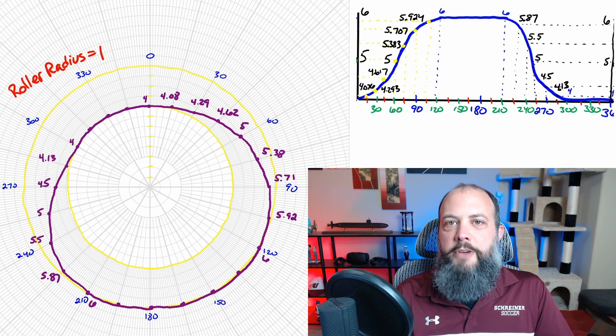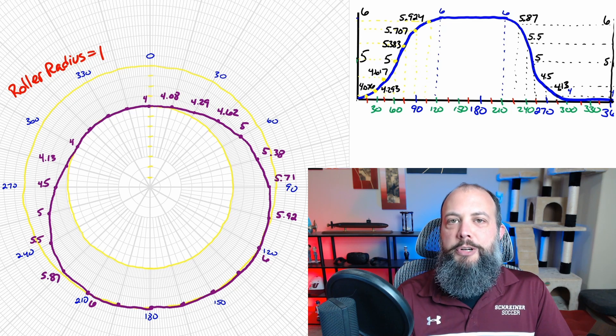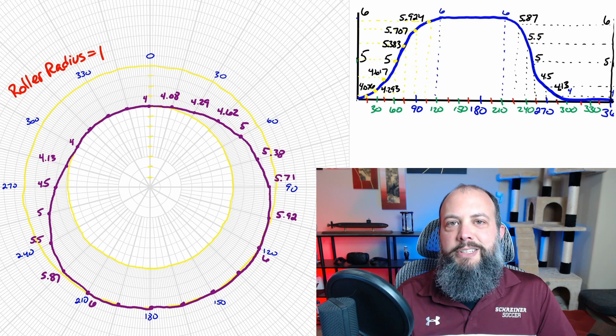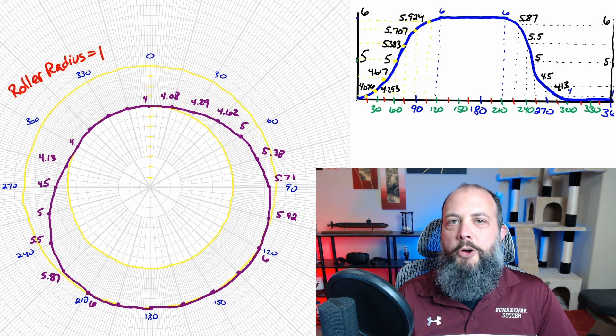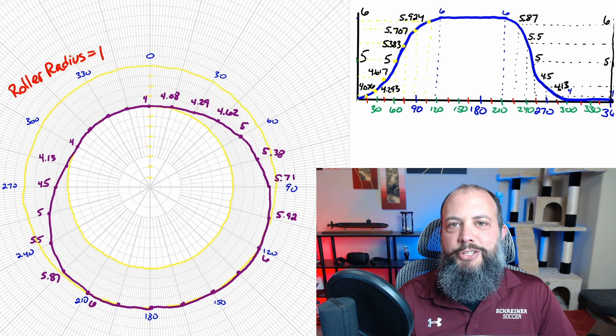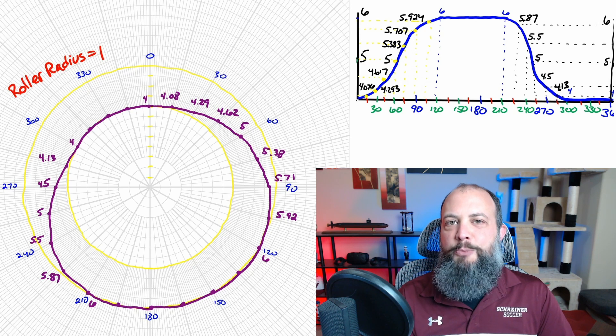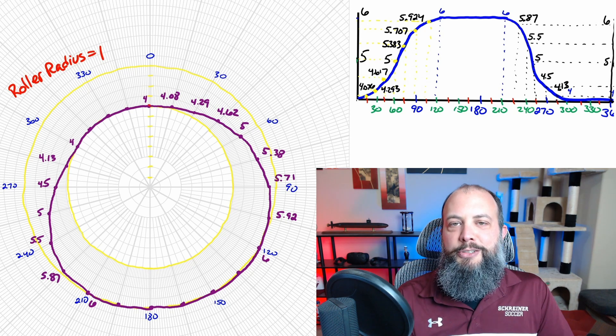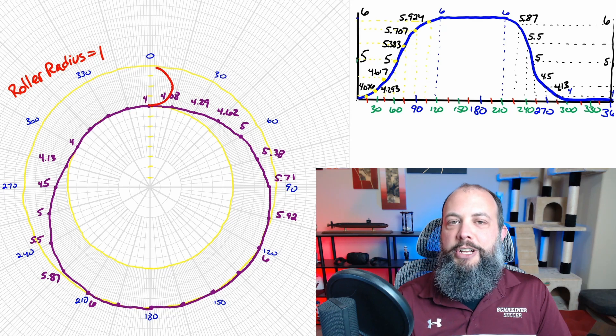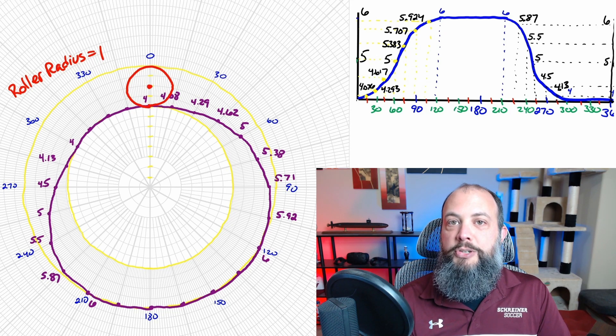Now suppose instead of a knife edge follower, you want to use a roller follower and we'll say a roller radius of one centimeter. In this case, each of these points that's already labeled as the knife edge line is going to serve as the bottom quadrant of the roller. So at the zero degree marker, you're going to draw a circle that has its bottom quadrant at four, the same location as the knife edge follower.